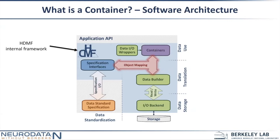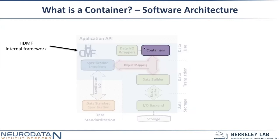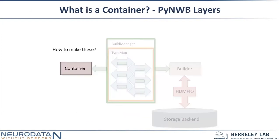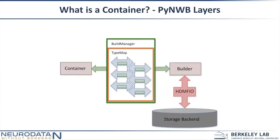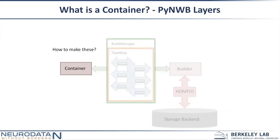The point of this talk is to figure out how you write the objects that exist in this layer. The container goes through this mapping layer into an intermediate layer called builders, and then the HDMF IO layer converts that abstract representation into the storage backend. We're going to talk about how to make these.